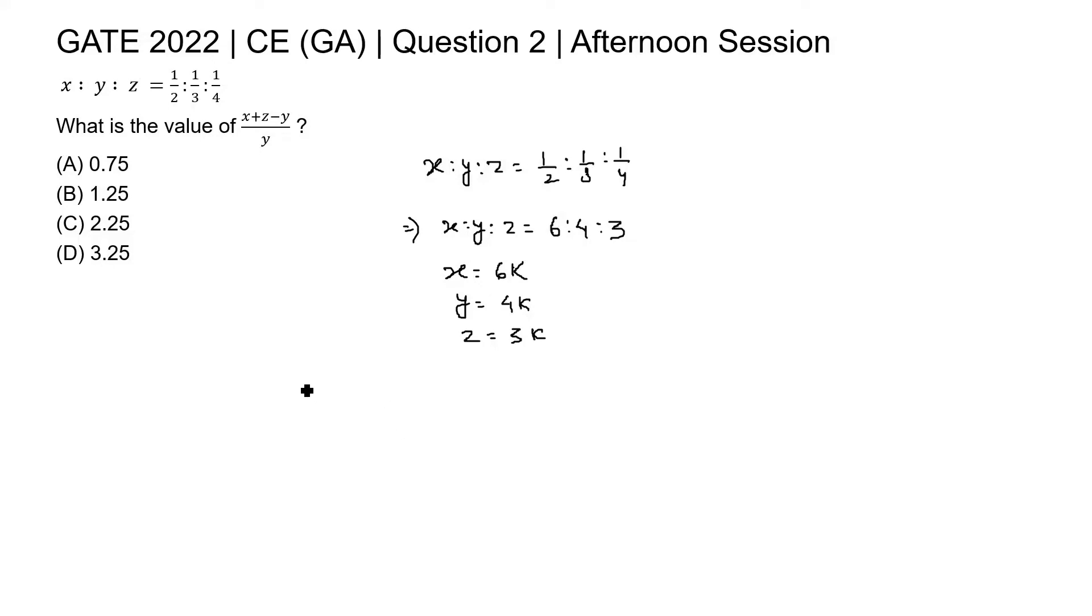The value of this X plus Z minus Y by Y equal to, X is 6k plus Z 3k minus Y which is 4k divided by Y is 4k. This will be 6 plus 3, 9, 9 minus 4 is 5k divided by 4k. K and k is cancelled out, so 5 by 4.